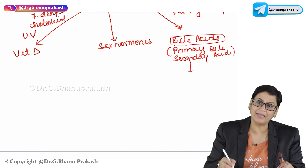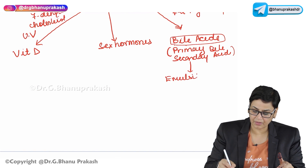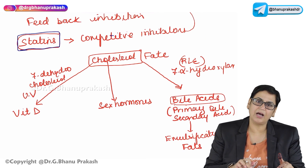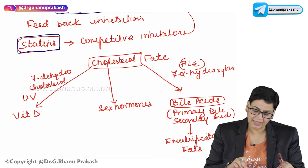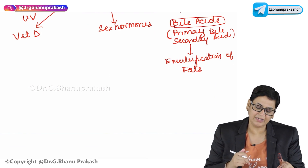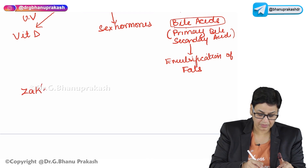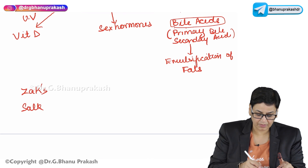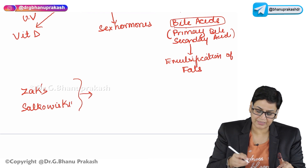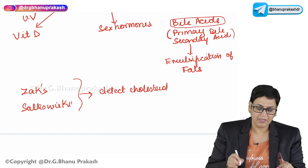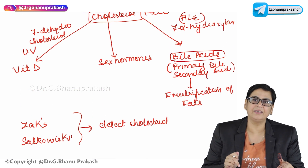The function of bile acids is emulsification of fats. There are also important ways of detecting cholesterol: the Liebermann-Burchard reaction, the Sachs reaction, and Salkowski reactions are reagents used to detect cholesterol. This covers the synthesis and degradation of cholesterol. Thank you.